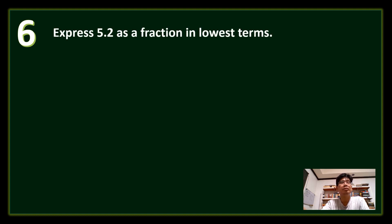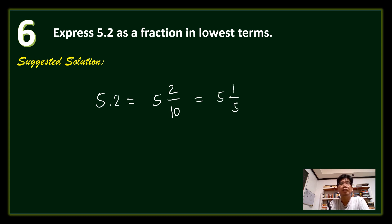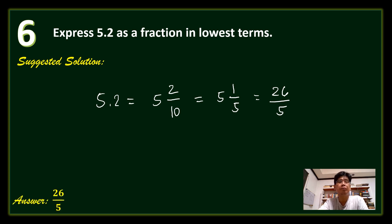Question number 6: Express 5.2 as a fraction in lowest terms. 5.2 is the same as 5 and 2 tenths. The fraction part, 2 tenths, simplifies to 1 fifth. Converting the mixed number to an improper fraction: 5 times 5 is 25, plus 1 equals 26. The answer is 26 over 5.